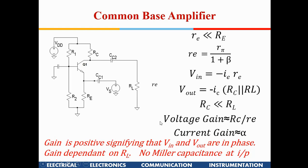This voltage gain is exactly the same as that of a common emitter amplifier — the voltage gain remains the same. However, in the common emitter you have a current gain of beta, whereas in the common base the current gain is alpha, which is less than one. Another difference is that here the gain is positive, meaning V-in and V-out are in phase.